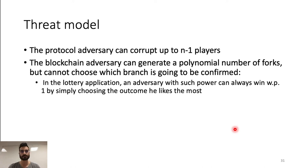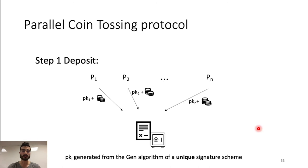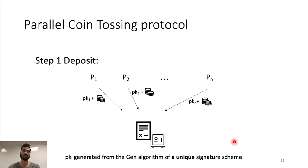Our coin tossing protocol starts with step zero, where P1 deploys the smart contract. In the smart contract, the following information are hardwired: the session id, the description of the deposit function, and the description of the claim function. After that, all the players deposit an amount of coin plus a public key. This public key must be generated from a generation algorithm of a unique signature key. By unique, we mean that an adversary cannot generate two different signatures for the same message and the same key, even if the key is malformed.